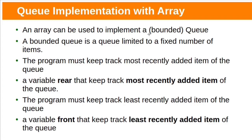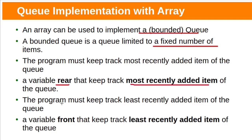An array can be used to implement a Bounded Queue. Bounded Queue means the queue is limited to a fixed number of items. The program must keep track of the most recently added item using a variable called Rear, and also keep track of the least recently added item using a variable called Front.